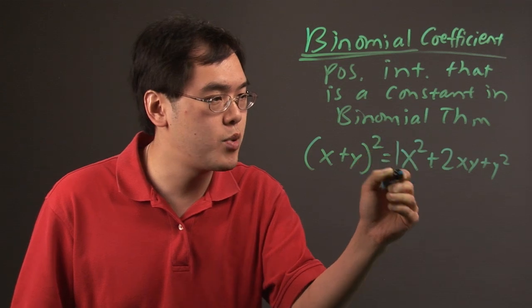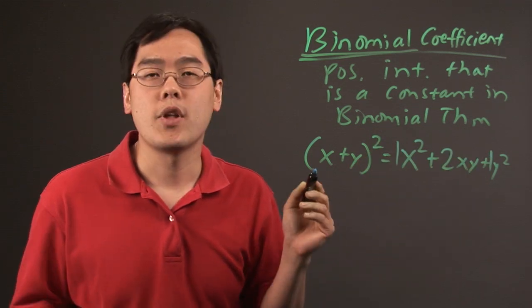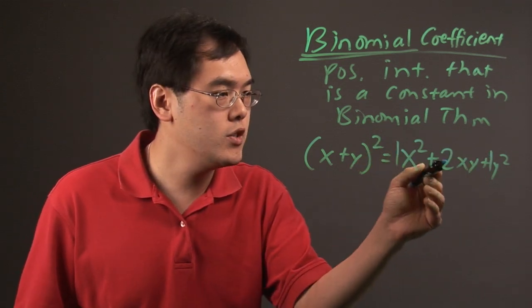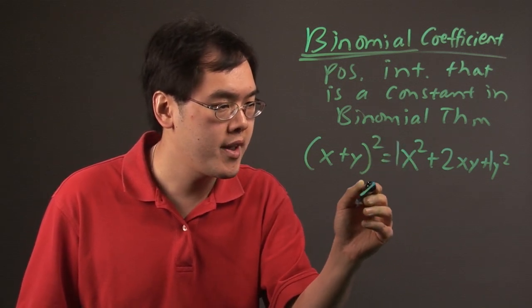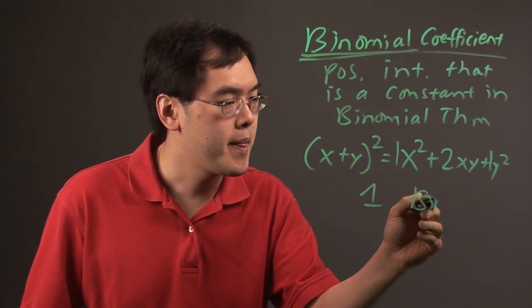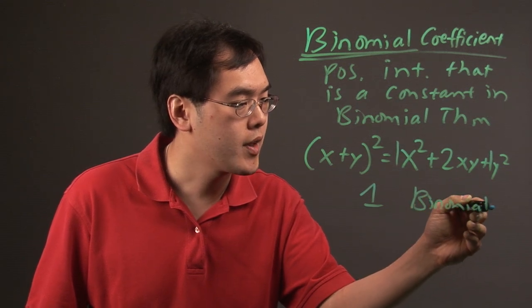Now the idea here, as you know, is that the one is pretty much implied here. Now notice the numbers one, two, and one. What that tells you here is that because the number one is in front of the x squared, that one is a binomial coefficient.